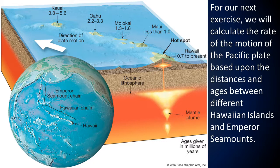For our next exercise, we will calculate the rate of motion of the Pacific Plate based upon the distances and ages between different Hawaiian islands and Emperor Seamounts. As a review, a volcanic hot spot is an area in the mantle from which heat rises as a thermal plume from deep in the earth. High heat and lower pressure at the base of the lithosphere facilitate melting of rock. This melt, called magma, rises through cracks and erupts to form volcanoes. As the tectonic plate moves over the stationary hot spot, the volcanoes are rafted away and new ones form in their place, resulting in a chain of volcanoes such as the Hawaiian Islands and the Emperor Seamount Chain.